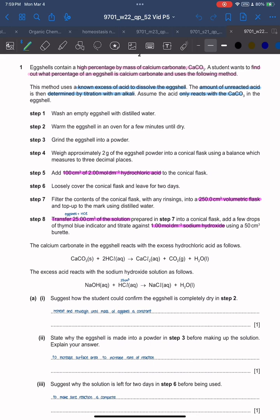Step 4: Weigh approximately 2 grams of eggshell powder into a conical flask using a balance which measures to three decimal places. Step 5: Add 100 cm³ of 2.00 mol/dm³ hydrochloric acid into the conical flask. Step 6: Loosely cover the conical flask and leave for two days.